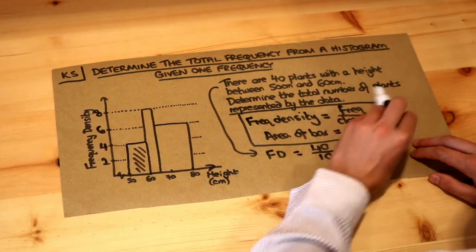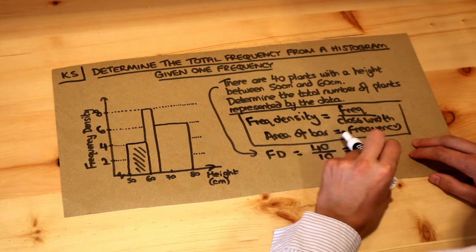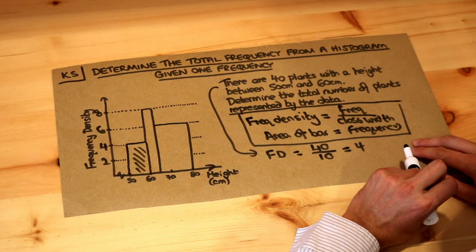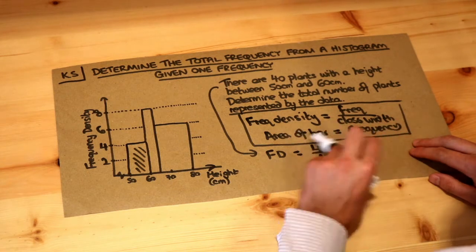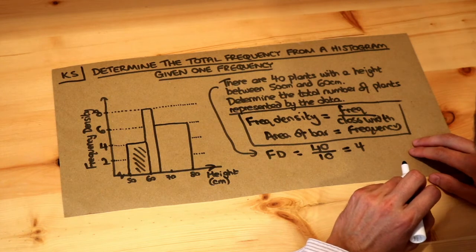Now we want to know the total number of plants represented by the data. Now if the area of a bar is equal to the frequency, then the total frequency will be the total area of the bars. So total area is equal to total frequency.